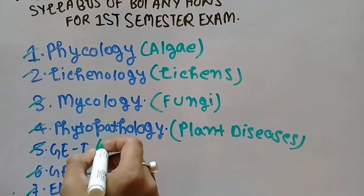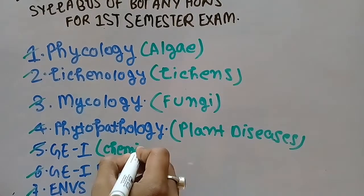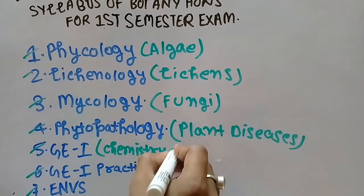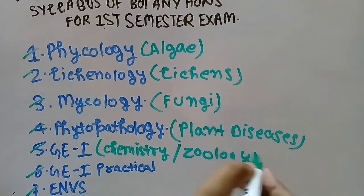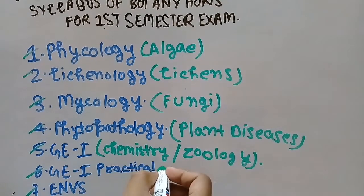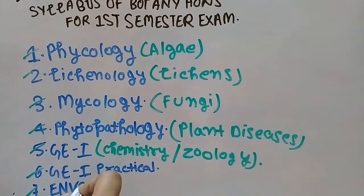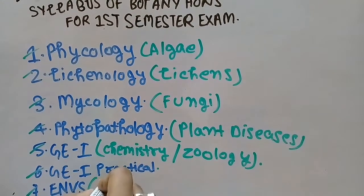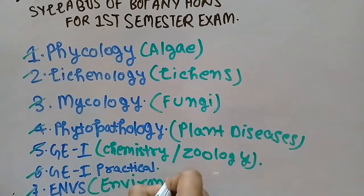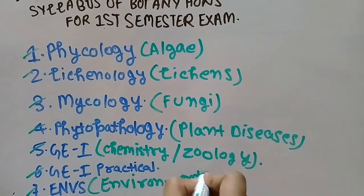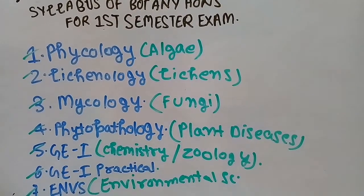Preferably, in Generic Elective there is Chemistry or Zoology. In Generic Elective Practical, there will be the practical for Chemistry and Zoology. ENV is Environmental Science.